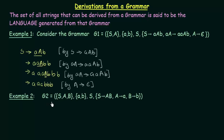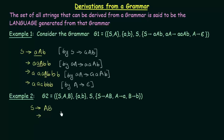Here we have another example grammar G2. S, A, B are the non-terminal symbols, and a and b are the terminal symbols. S is the start symbol, with production rules: S gives AB, A gives small a, and B gives small b. Starting from S, we get AB, then replacing A with small a and B with small b, we get the string ab.